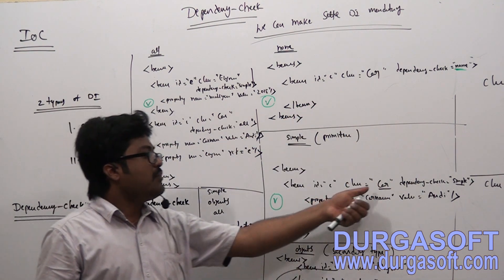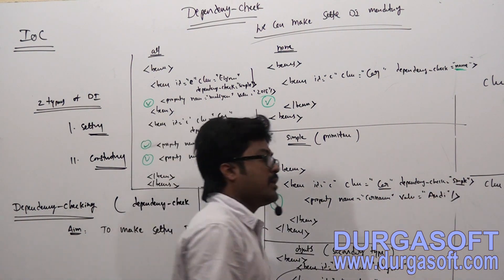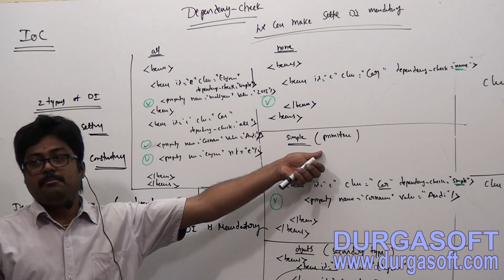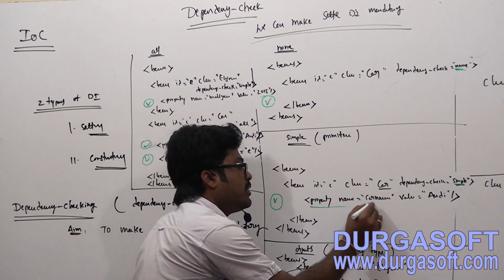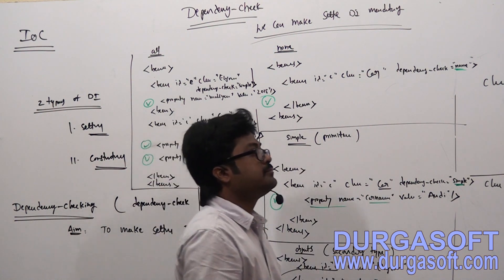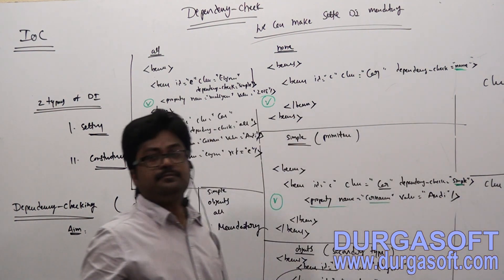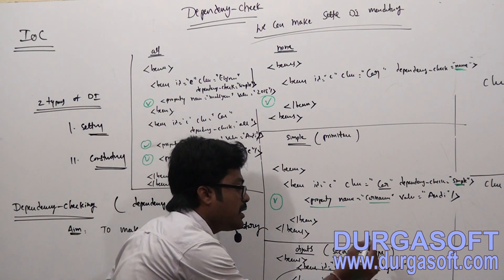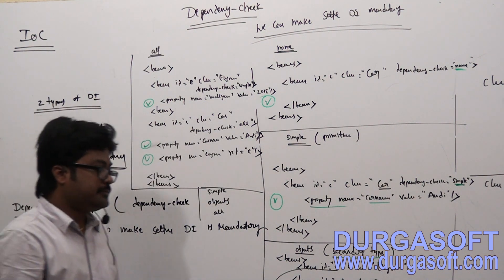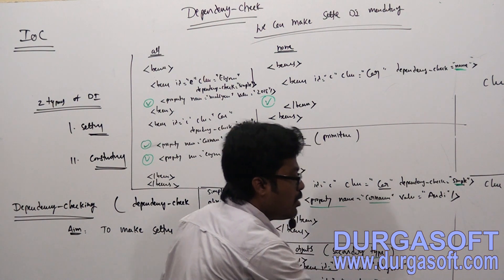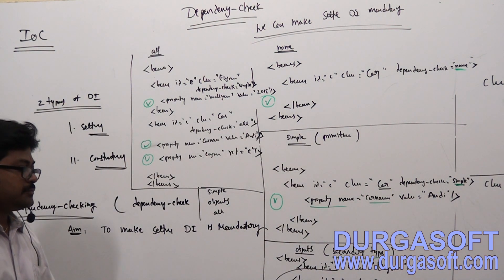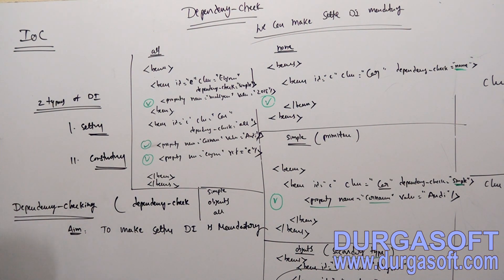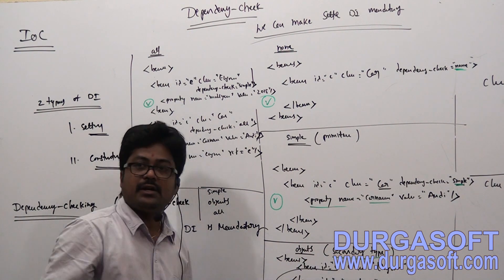If you apply dependency-check simple for car, it is mandatory to call primitive setter methods — compulsory you need to call the primitive setter method set car name. If you want to make secondary data type setter dependency injection mandatory, you can apply dependency-check value as objects. If you apply objects, then it is mandatory to inject secondary data types.